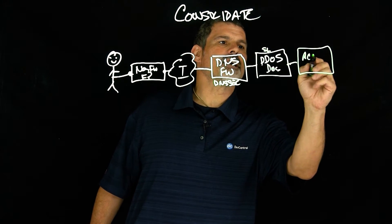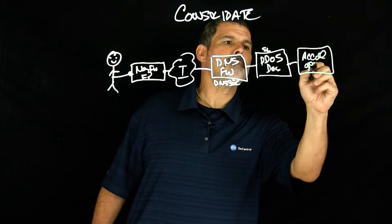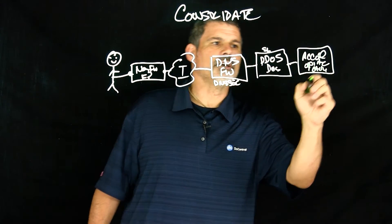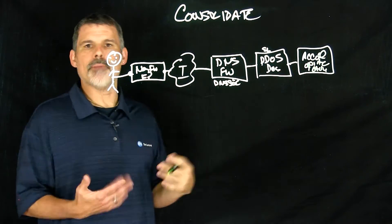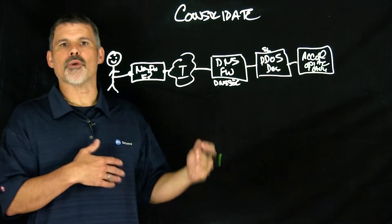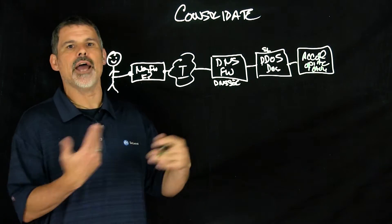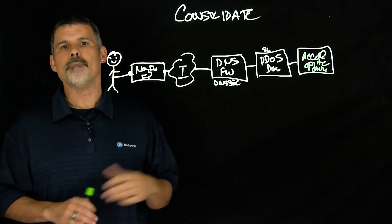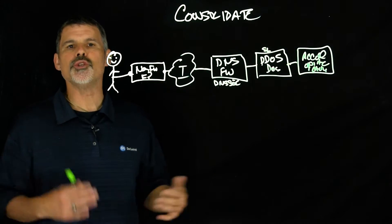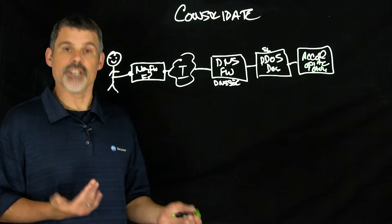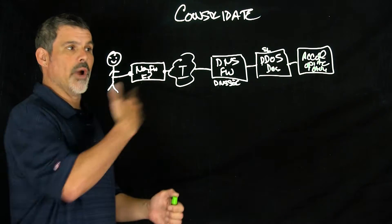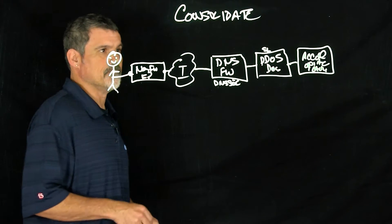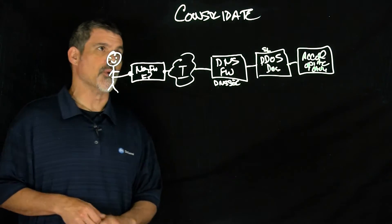Next is acceleration and optimization along with caching. You can optimize your traffic, whether it be for client-side or server-side, and accelerate to make sure that you're using your bandwidth efficiently with BIG-IP. That would be your application acceleration module.